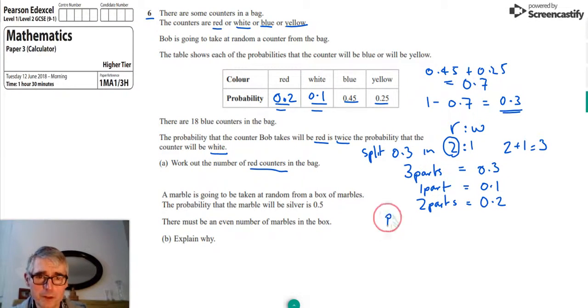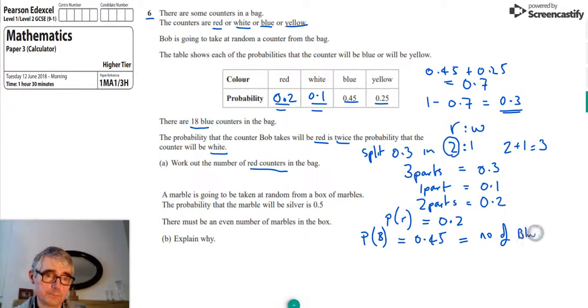So this hasn't given us the number of red counters, it's just given us the probability of getting a red counter. So we know the probability of getting a red counter is 0.2. Now we are told, we can now get these into the form of numbers. We're told that there's 18 blue counters in the bag, and we know that the probability of getting a blue is equal to 0.45 from the table. But we also know that that is equal to the number of blue counters divided by the total number of counters.